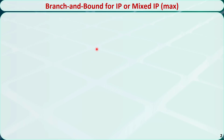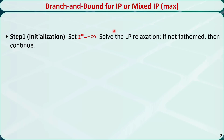Let's check the branch and bound algorithm for solving maximization integer programming or mixed integer programming problems. A minimization integer programming or mixed integer programming problem can be converted to a maximization problem by maximizing the opposite of the objective function. Step 1 is called initialization. Set z* to be negative infinity. Solve the linear programming relaxation. If not fathomed, then continue. I'll talk about what fathoming is later.